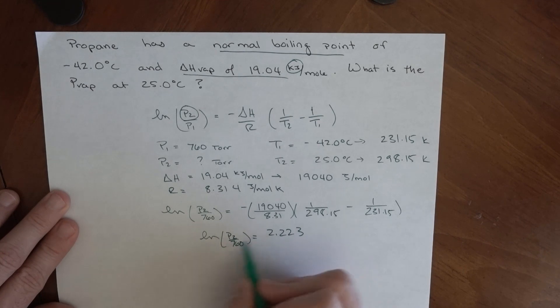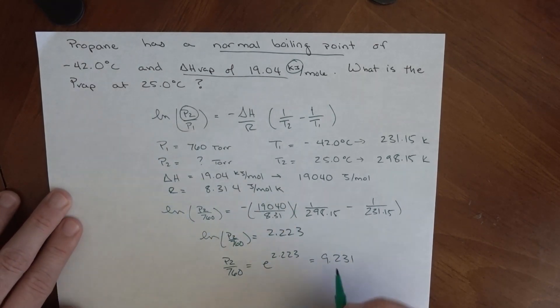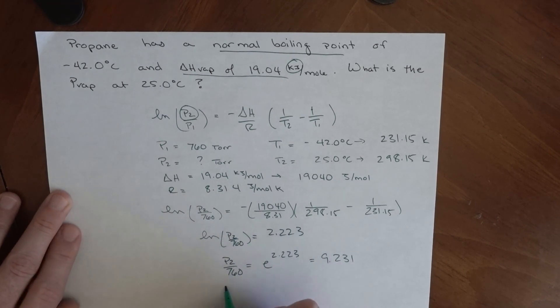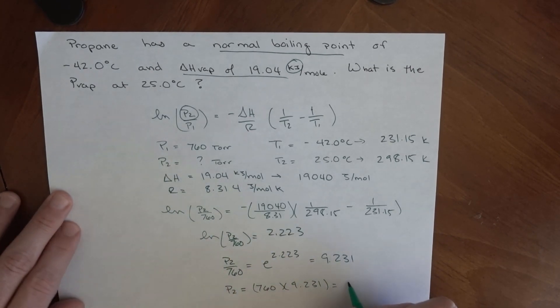We have to use Euler's number, the exponent on both sides. So P2/760 = e^2.223, and that is 9.231. Now I've got P2 = 760 × 9.231, which comes out to 7015 torr, or with the right number of significant figures, 7020 torr.